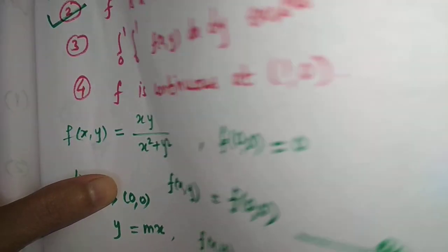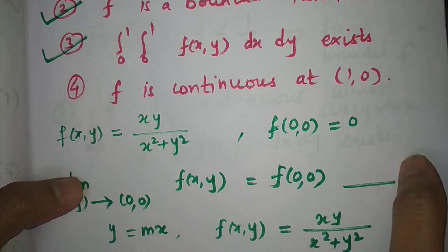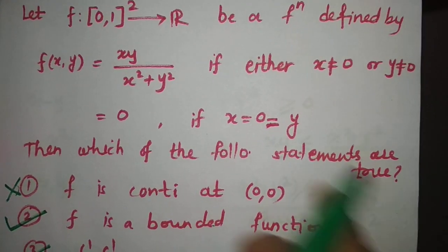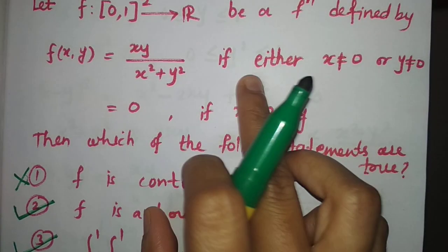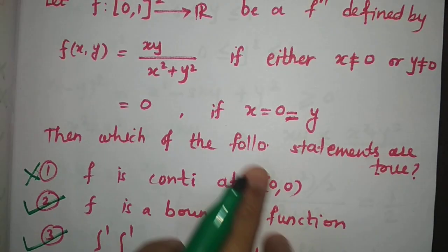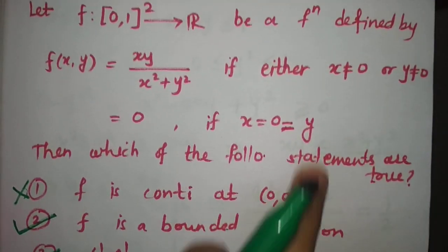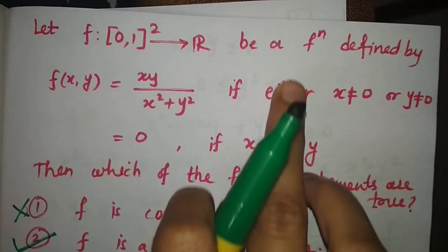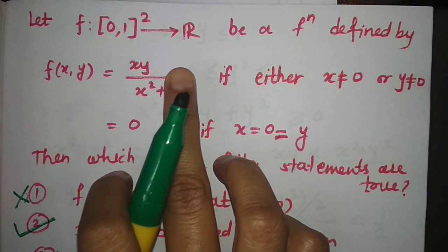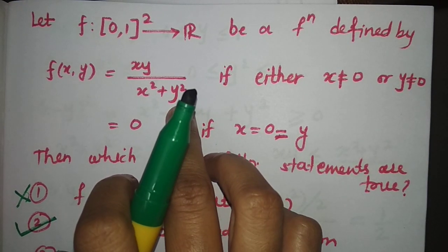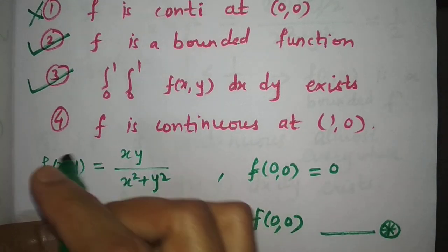For option four, f is continuous at (1,0). The point (1,0) has x = 1 (non-zero) and y = 0, so it falls under the case where either x is non-zero or y is non-zero, giving f(x,y) = xy/(x²+y²). This is a rational function and is continuous at (1,0). Hence option four is also correct.